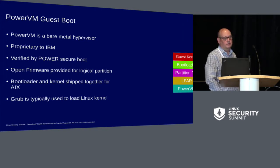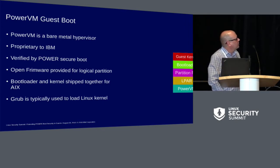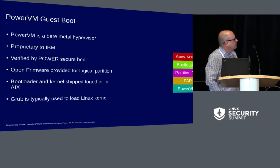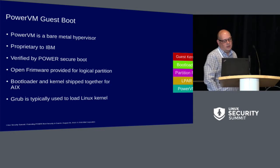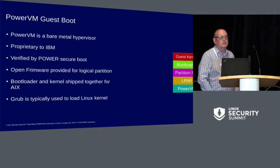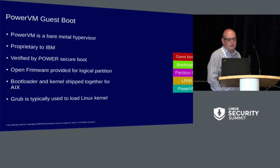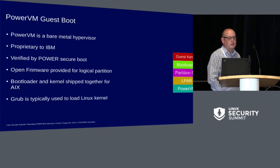There is firmware provided for the logical partitions as part of our firmware stack — that's open firmware, referred to as partition firmware. The AIX bootloader and kernel are shipped together as a unit. The big difference on Linux is that it's not just some blob — it's separated into a bootloader and a kernel.